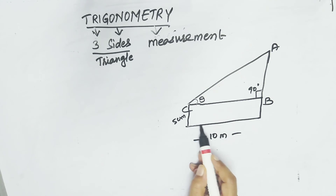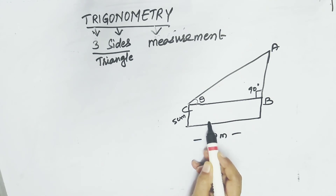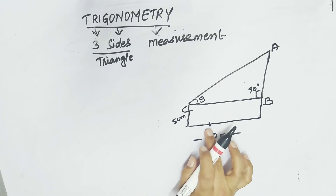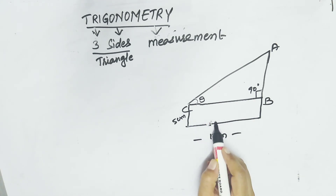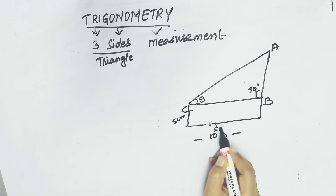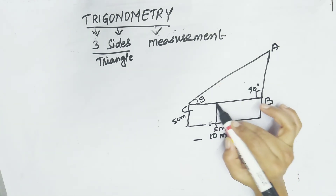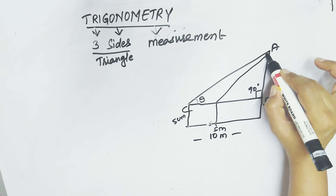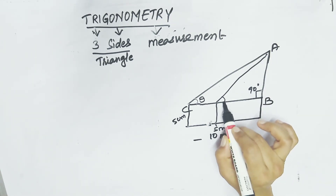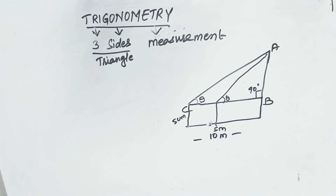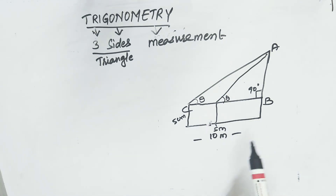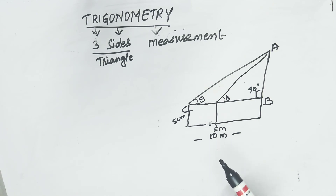If a person moves five meters towards the school and is now standing here looking at the top of the building, the angle changes. We can easily find the height and distance of the top of the building using the mathematical technique called trigonometry.